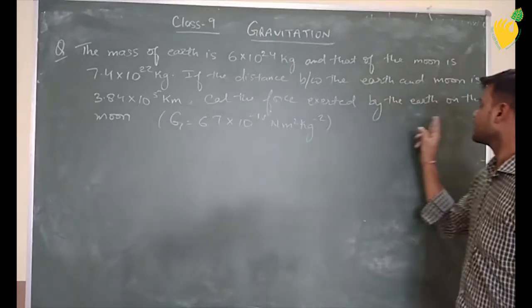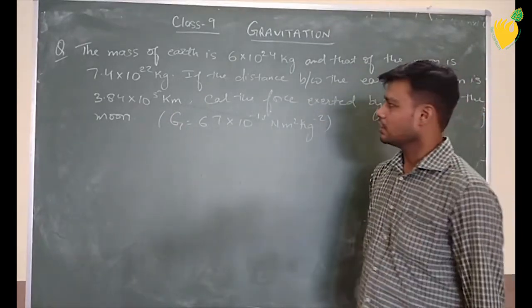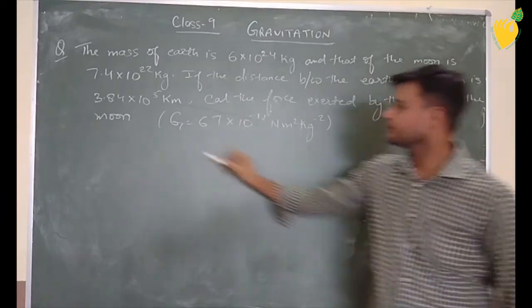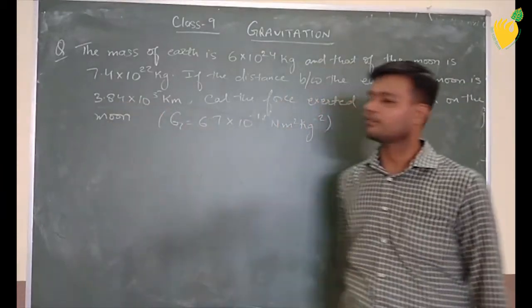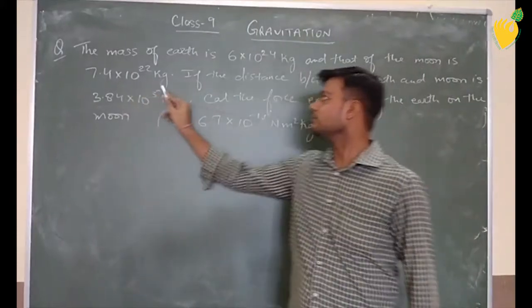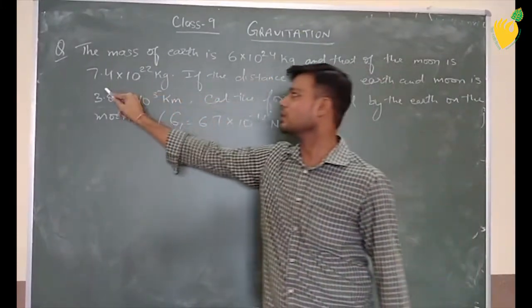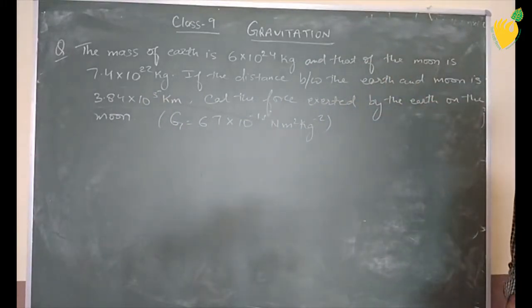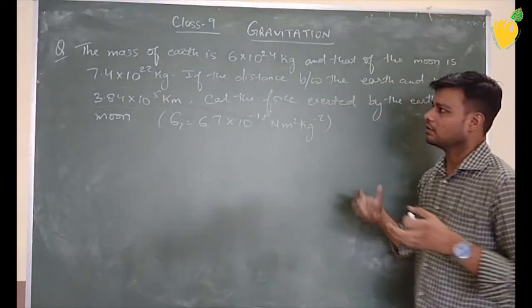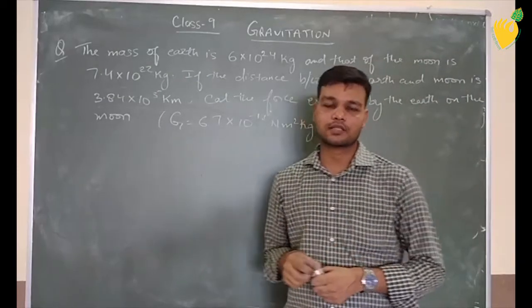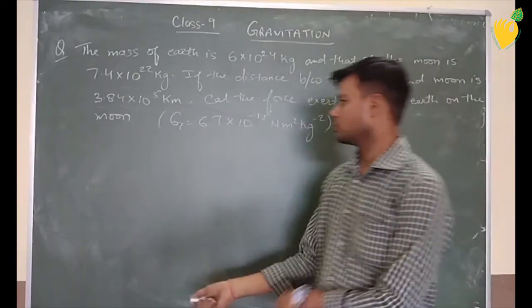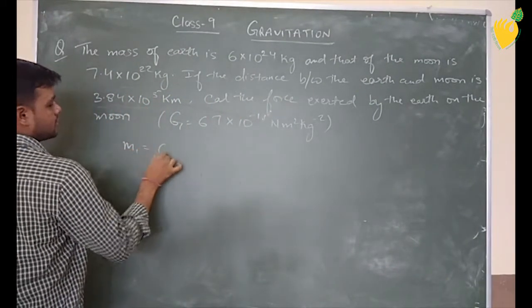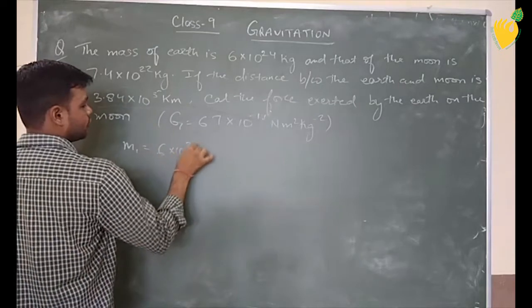calculate the force exerted by the Earth on the moon. Earth is given and moon is given. You need to find out how much force acts on the moon. M1 mass is 6 into 10 to the power 24 kg.